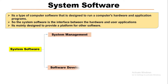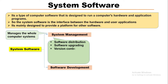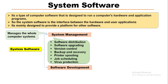System software can be divided into two categories: one is system management and another is software development. System management softwares usually manage the whole computer system and have different functions like software distribution, software upgrading, version control, backup and recovery, printer spooling, job scheduling, and virus protection.